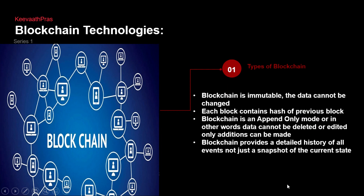Blockchain is immutable — meaning nothing can be changed — it is transparent and tamper-proof, and the data cannot be changed. As we talked about in the previous lecture, the blocks contain a hash of the previous block, so hash after hash joins together like train compartments connected to each other. The blockchain is append-only, meaning data cannot be deleted or edited — only additions can be made.